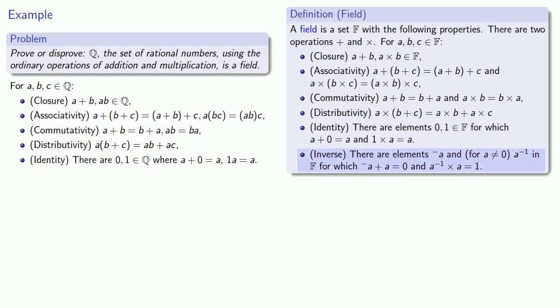And the last thing we have to check are the existence of the inverses. We have to confirm that there are elements negative a, and as long as a is not equal to zero, a inverse in our set for which negative a plus a is zero, and the inverse of a times a gives us one. And again, if we use our sample three-fifths, we see that negative three-fifths plus three-fifths is going to be zero. It's not enough that this inverse exists, but it has to be in our set. And negative three-fifths is, in fact, a rational number.